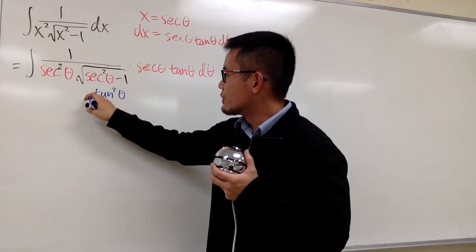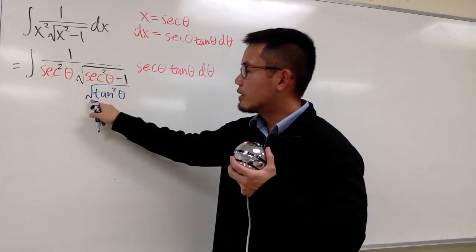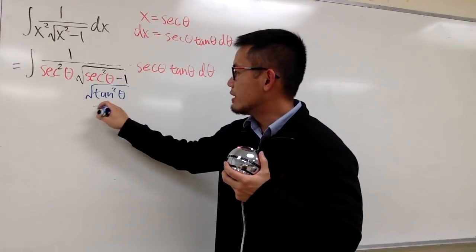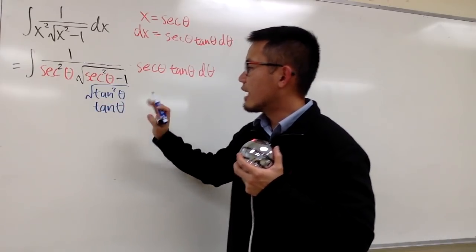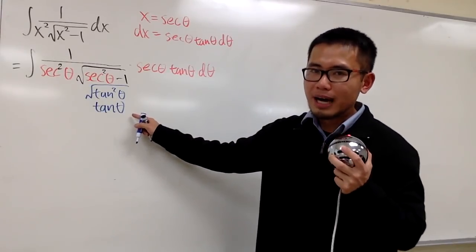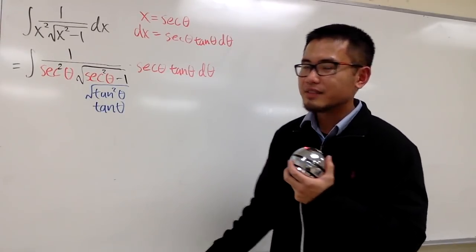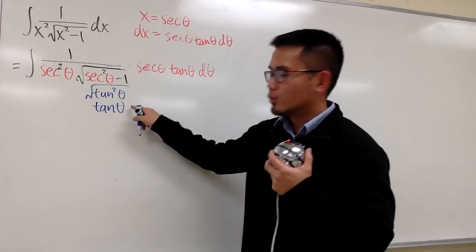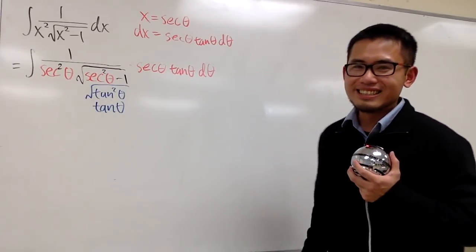And of course, we still have to take the square root, but square root and square, they cancel each other out, and we will just end up with tangent theta in the denominator right here. And of course, we will assume everything is positive. That's why we don't bother with the absolute value. Just for integration purpose, like this.